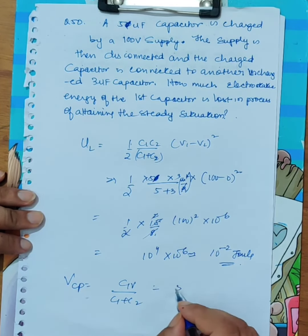This is the first capacitor charge. 5 into 100 upon C1 plus C2. 5 and 3 is 8.